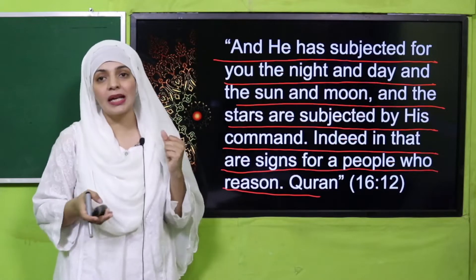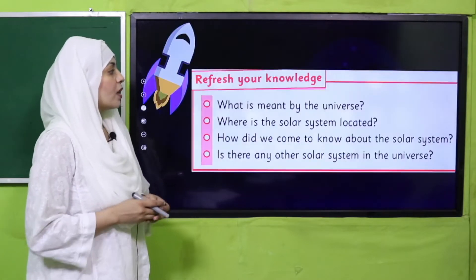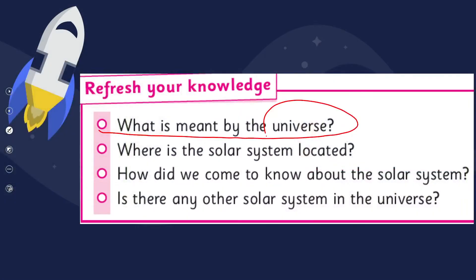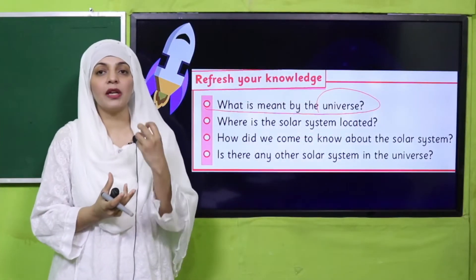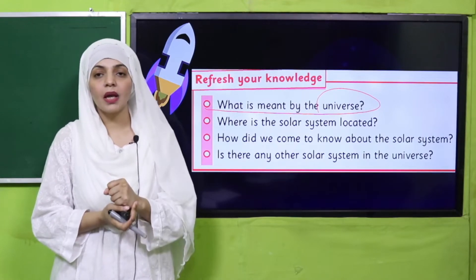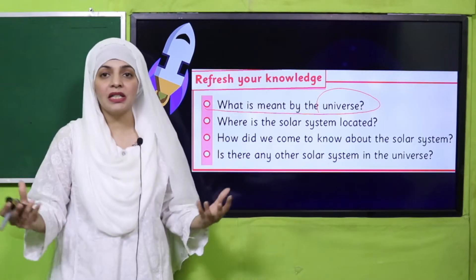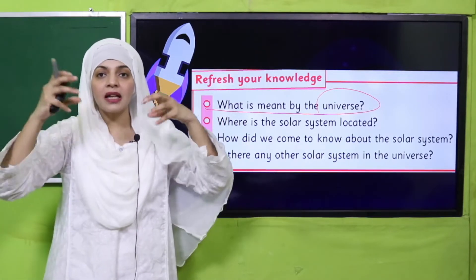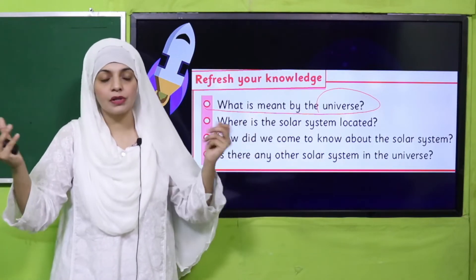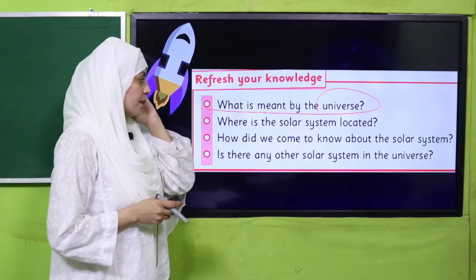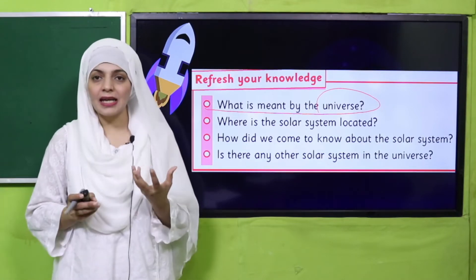Let's move to the pre-reading questions. Quickly tell me: what is meant by 'universe'? The universe means everything — all the matter, all the activities, all the energy — everything that exists is inside the universe. Where is the solar system located? The solar system is located in the Milky Way galaxy.